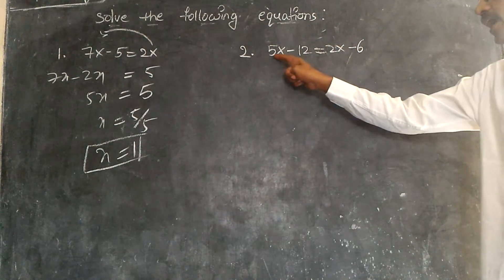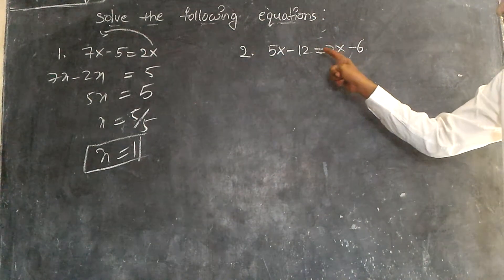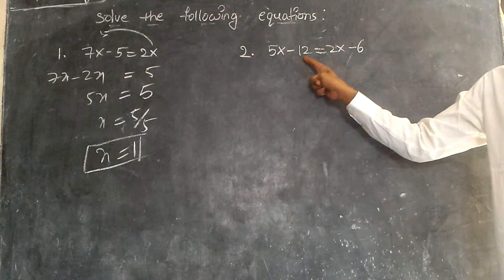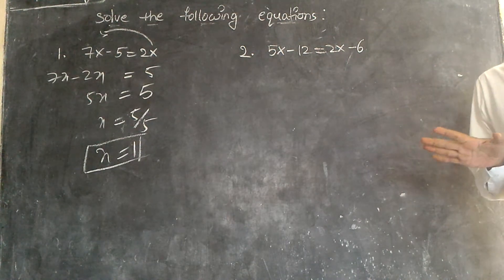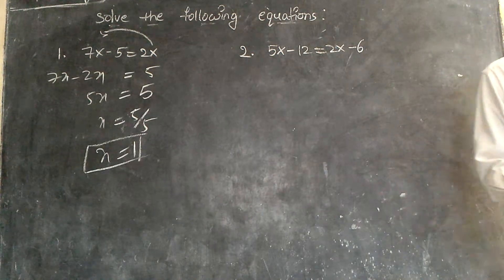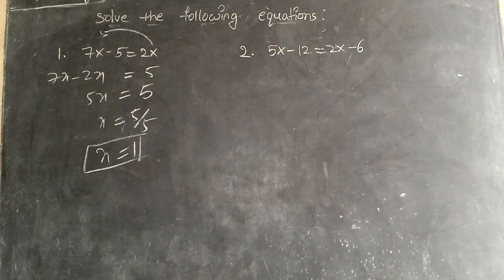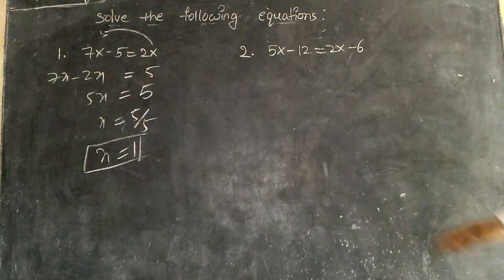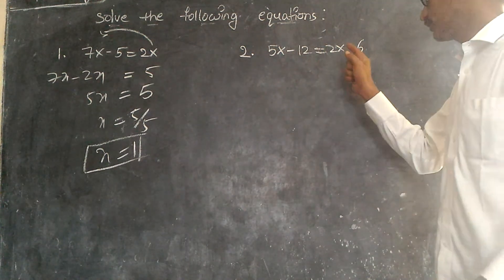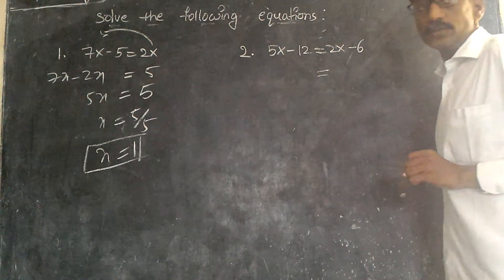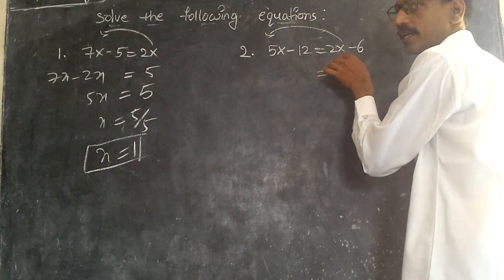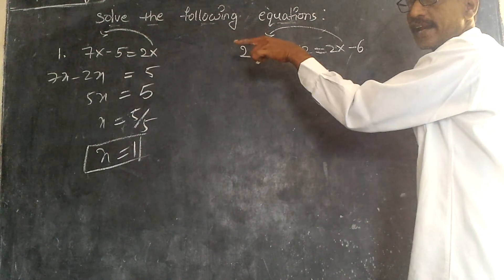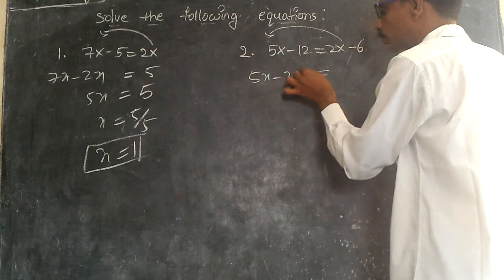Similarly, here you have one variable and here one variable. Here we have one constant. Here we have one more constant. I told you so many times, separate the variables and constants. By transposing, keep equals to first. And by transposing 2x here plus will go that side, minus.